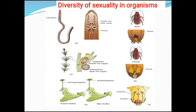Let us see diversity of sexuality in organisms. In a chart of different organisms: A shows a bisexual organism — earthworm; B shows a unisexual organism — cockroach; C shows a bisexual plant — Chara, showing both male and female reproductive structures; D shows a unisexual or dioecious thallus of Marchantia; and E shows a bisexual flower of sweet potato showing both male and female reproductive structures.